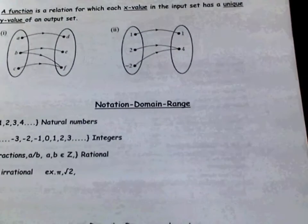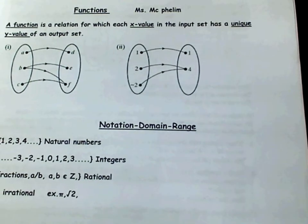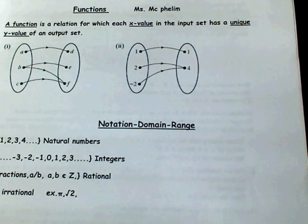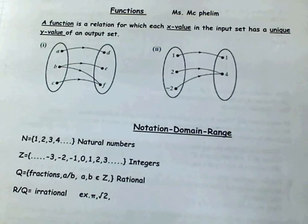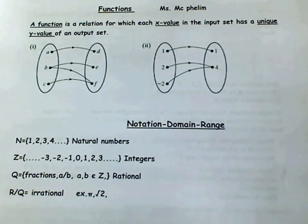Now, moving on to what a function is. We can draw your attention to our notes on functions. A function is a relation for which each x value in the input set has a unique y value of an output set, which has been shown in the last example. Each of them, you have an input value, and each has a unique output value.